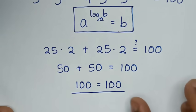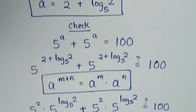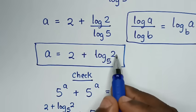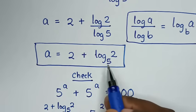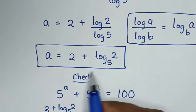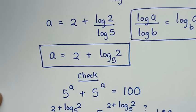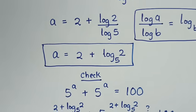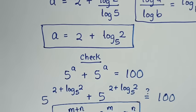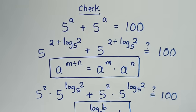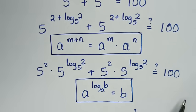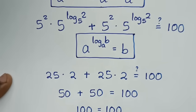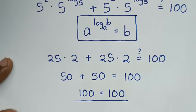The value of a is 2 plus log of 2 base 5, which is the simplified form. Thank you, don't forget to subscribe to my channel, and see you in the next video, bye bye.